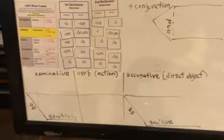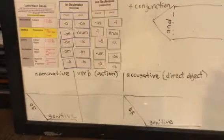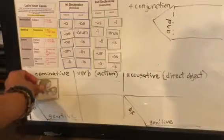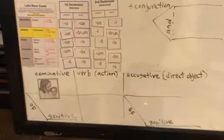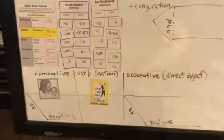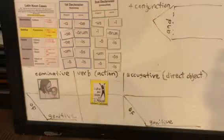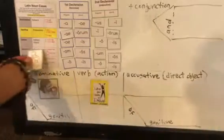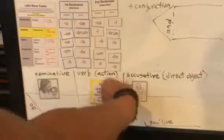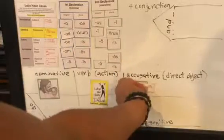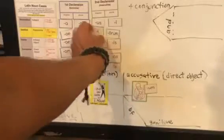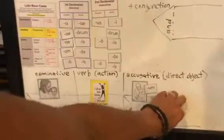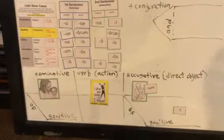Number one: Christians praise the Son of God. So Christians praise — right — Son, Filium accusative. So Filium, you go across, of God, so that's going to be your genitive. Nominative.